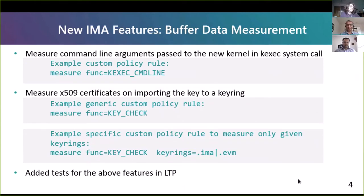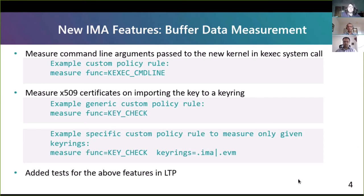We upstreamed two buffer measurement features in IMA. The first one measures the command line argument passed to the new kernel in the KEXEC system call. This is enabled through a custom policy, namely KEXEC_CMD_line. The second measurement is measuring X.509 certificates when the key is imported to a key ring. This is enabled through the custom policy rule key_check. You can enable measuring keys imported to any keyring, or limit it to particular key rings such as the .ima or .evm key rings by specifying the key ring names in the policy.